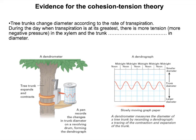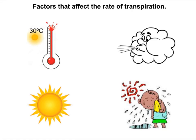It's warmer and brighter at midday, so more water is evaporating through the stomata. That means there's more tension — more suction of water through the plant. Because there's more tension, the trunk becomes narrower. Different factors can affect the rate of transpiration.